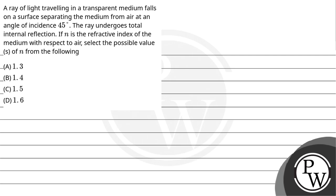Now, let's read the question. A ray of light traveling in a transparent medium falls on a surface separating the medium from air at an angle of incidence 45 degrees. The ray undergoes total internal reflection. If N is the refractive index of the medium with respect to air, select the possible values of N from the following.